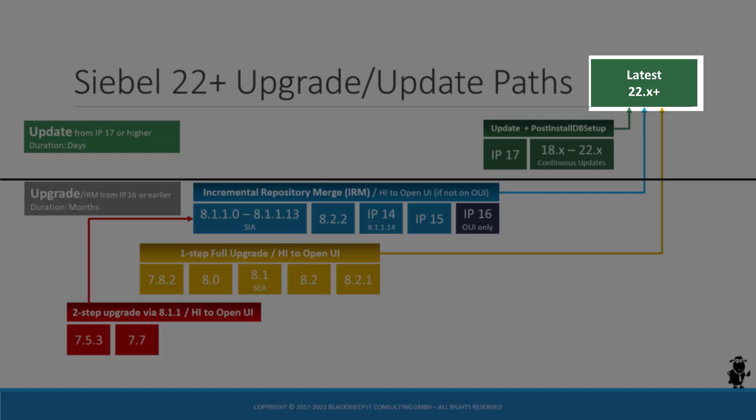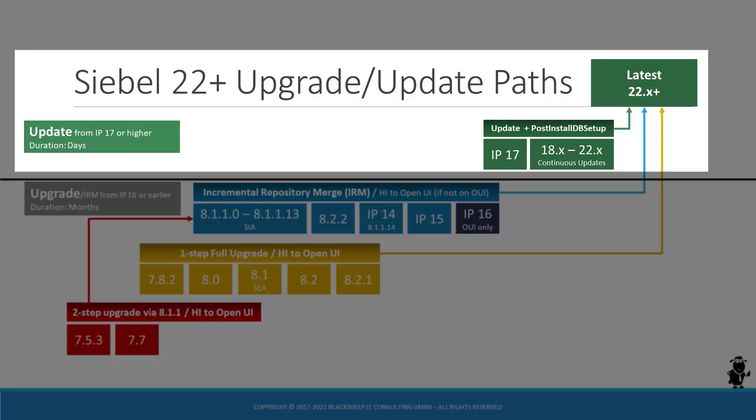Upgrade projects are conducted using the latest Siebel CRM update available at the time you start the project. The upgrade path is direct from any version prior to IP17 to 22.1 and higher. If you already ran a successful Siebel upgrade to IP17 or higher, you might be on any version between IP17, Siebel 18, 19, 20, or 21. To get from there to the latest update, you execute the aforementioned update process. The real benefit of the continuous release model is evident here, as the update process will at most take a few person days.